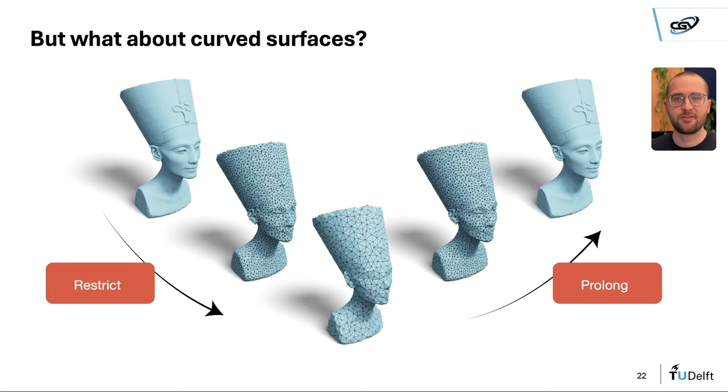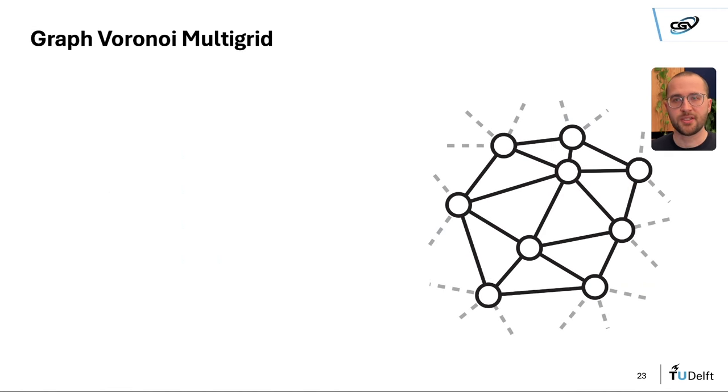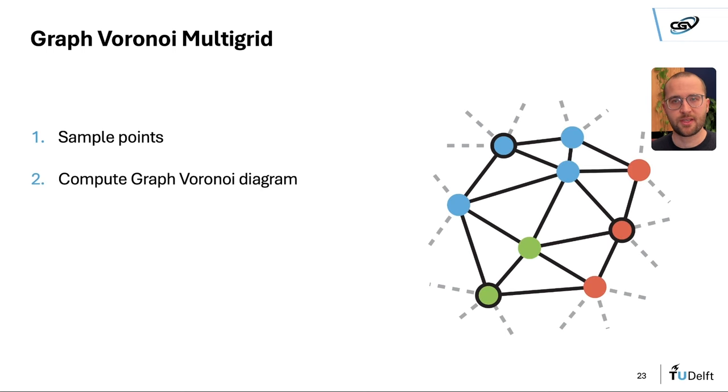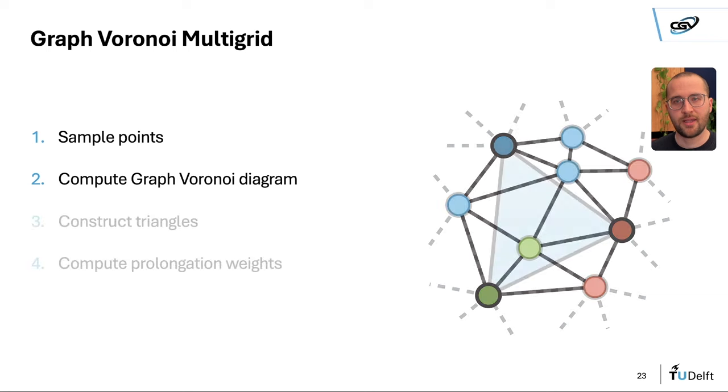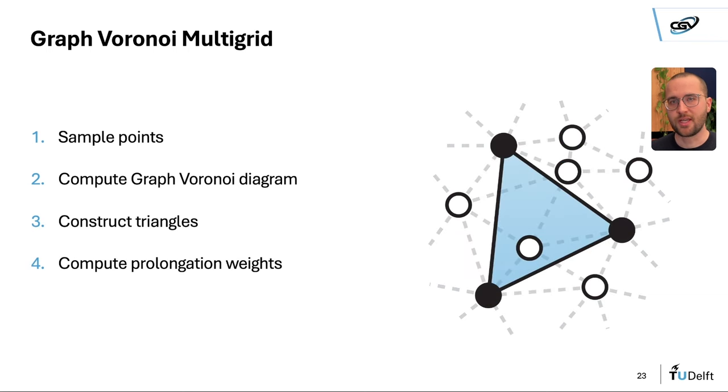The main challenge is to define a hierarchy and restriction and prolongation operators for curved surfaces. In Gravo multigrid, we create a hierarchy by sampling points on the surface. For our prolongation weights, we compute graph Voronoi cells and then construct triangles from the neighboring Voronoi cells. Then we use barycentric coordinates as prolongation weights.